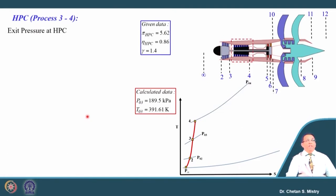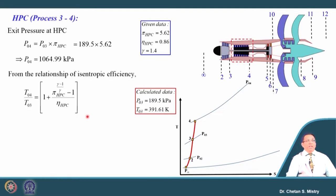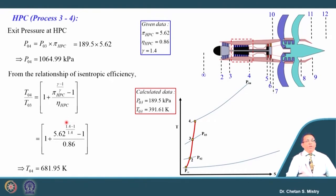For the HP compressor, the pressure ratio is 5.62 and efficiency is 86 percent. Based on the pressure ratio, the outlet pressure is 1064.99 kilo Pascal. Correlating temperature with pressure ratio and isentropic efficiency, the exit temperature T04 from the HP compressor is 681.95 Kelvin.